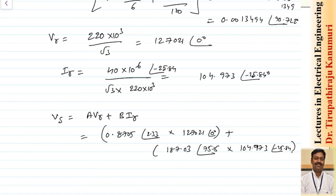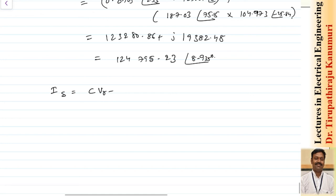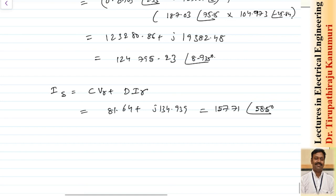Similarly, the sending-end current IS = C·VR + D·IR = 81.64 + j134.939 = 157.71∠58.5° A.